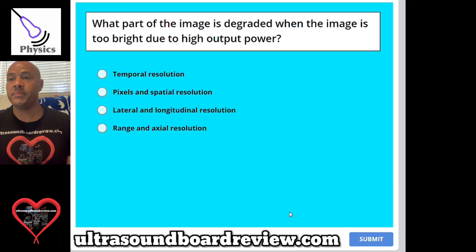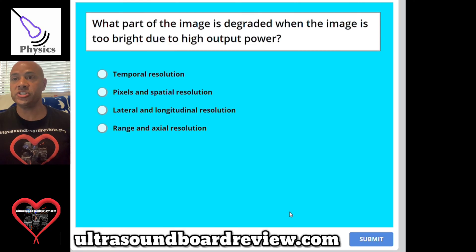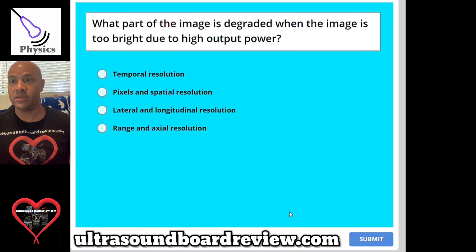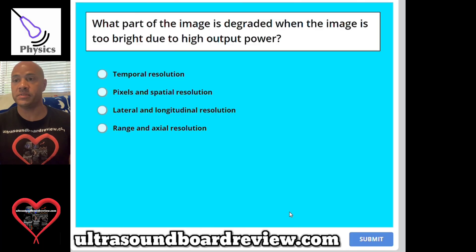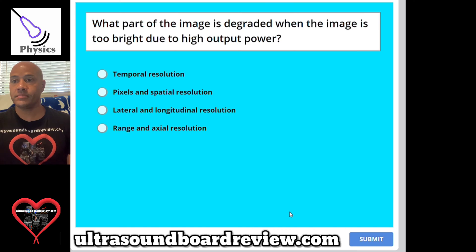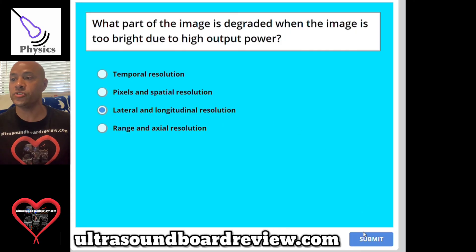Question 60: What part of the image is degraded when the image is too bright due to high output power? A, temporal resolution; B, pixels and spatial resolution; C, lateral and longitudinal resolution; or D, range and axial resolution. The answer is C, lateral and longitudinal resolution.